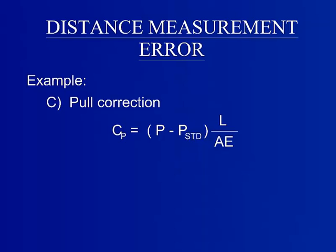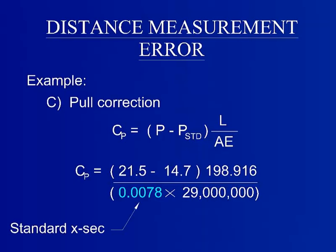Part C is the pull correction. The standard cross section can be found by measurement, calculation, or obtained from the manufacturer. For the purposes of this example, it is 0.0078 inches squared. The resulting pull correction from this example is a positive 0.0060 feet.